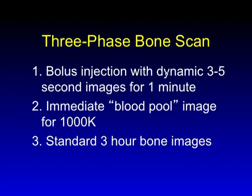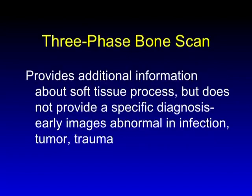The second phase, usually called the blood pool, is really an ECF space distribution, and then standard imaging follows. We often think of a three-phase study in the context of osteomyelitis, and you can certainly use it for that. But it's important to know it is simply telling us about what's going on in soft tissues — it's not a specific diagnosis. You have abnormal uptake in all kinds of processes: infection, tumor, trauma, and some others as well.